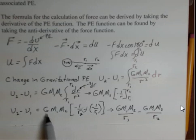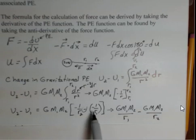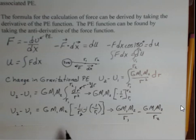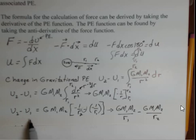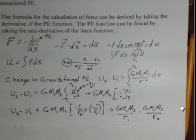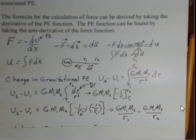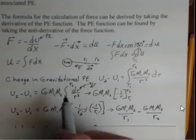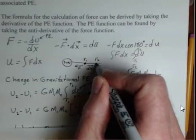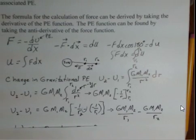The minus sign always comes in when evaluating at the lower limit. Applying the minus and multiplying through, distributing G·M1·M2 on both terms, we get the change in potential energy: ΔU = G·M1·M2/R1 minus G·M1·M2/R2, where R1 is the position closer to the Sun and R2 is farther away.